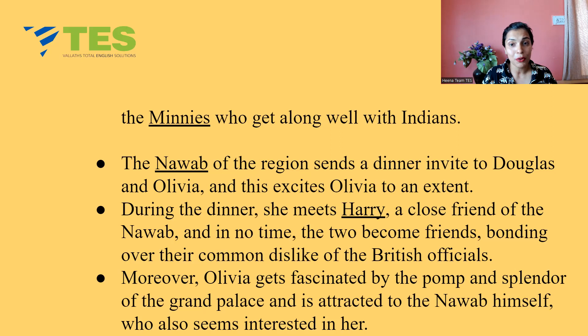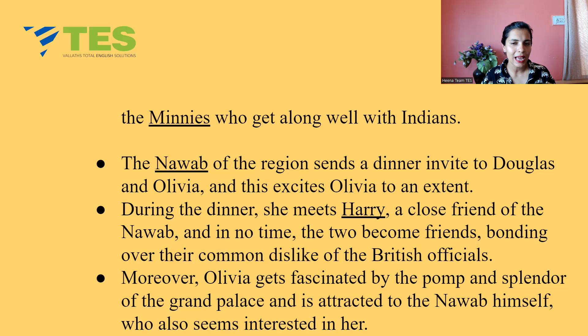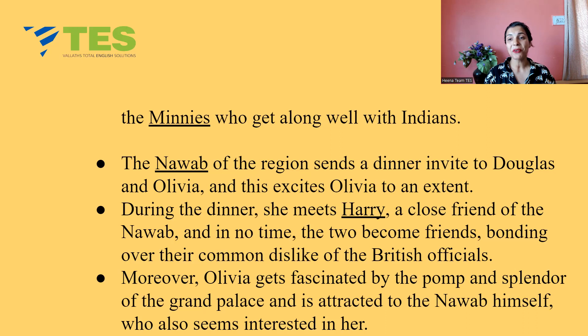The Nawab of the region sends a dinner invite to Douglas and Olivia, which excites Olivia because she has nothing to do but sit home all day. During this dinner, she meets Harry, a very close friend of the Nawab, and the two quickly become friends, bonding over their common dislike of British officials. Moreover, Olivia gets fascinated by the pomp and splendor of the grand palace and is attracted to the Nawab himself, who also seems interested in her.